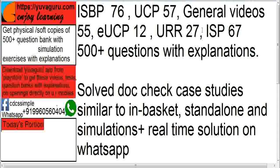General videos other than UCP, ISP, URR, and eUCP total 55 videos; eUCP has 12 videos; URR has 27 videos; ISP has 67 videos. All these videos cover the latest versions of five books: ISBP 745, UCP 600, eUCP 1.1, URR 725, and ISP 98. As editions are changed, the videos are updated accordingly. There are also 500-plus questions with explanations and correct answers. It also includes document-check case studies similar to in-basket and standalone exercises, plus real-time solutions given on WhatsApp.